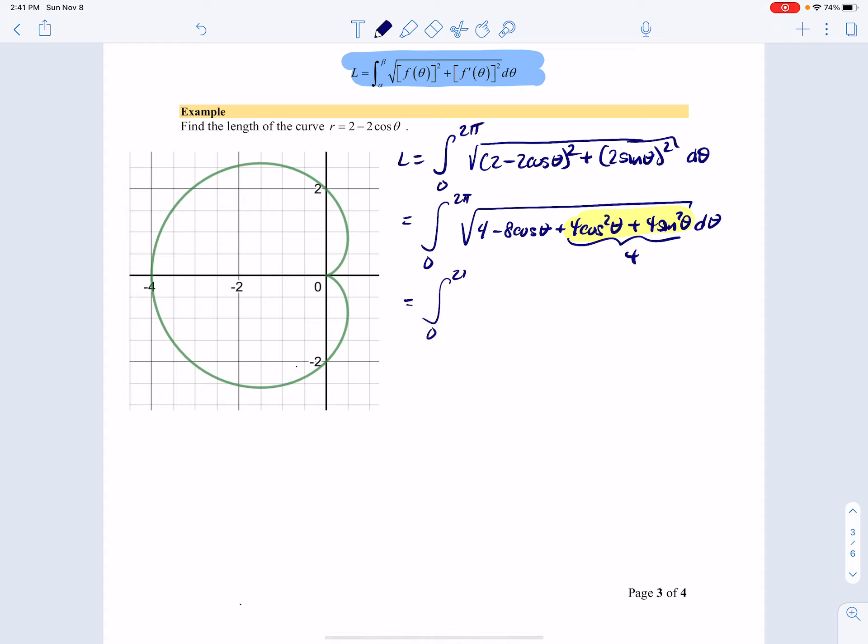And that means I have the integral from 0 to 2 pi of 8 minus 8 cosine theta. Now, from here, I'm kind of at a loss, but we'll just keep going anyway. Notice that we can factor out an 8 under the radical.